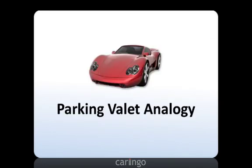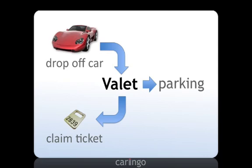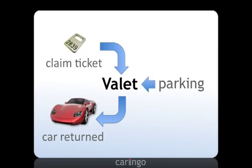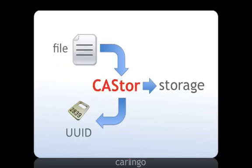The easiest way to understand Caster's UUIDs and storage methodology is with the analogy of a parking valet. When you drop off your car to have it parked, you are issued a claim ticket with a unique tracking number on it. When you are ready to pick up your car, you simply provide the claim ticket to the valet who then retrieves your car for you. You don't care where your car is parked or even if it was moved, how long it was stored, as long as it is returned to you in the same condition as when you dropped it off. Caster is like a valet for your digital content.